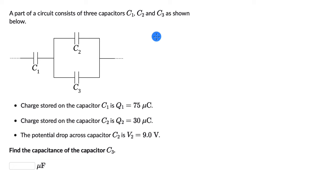In order to figure out capacitance, we can go back to the relation of capacitance, charge, and voltage. So C3 will be equal to Q3 divided by V3.